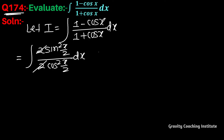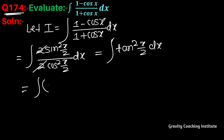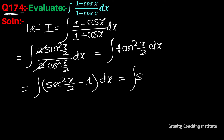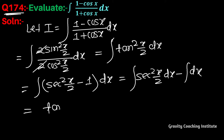The 2s cancel, and sin over cos equals tan, so we get tan squared (x/2). Therefore, I equals integration of tan squared (x/2) dx, which equals integration of sec squared (x/2) minus 1 dx. This splits into integration of sec squared (x/2) dx minus integration of dx.